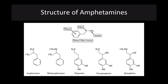If we look at the structures of dopamine, norepinephrine, epinephrine, and the amphetamines, you can see these structures are relatively similar: a phenyl group, an ethyl group, and an amine group. The structure of amphetamine versus methamphetamine is simply the addition of another methyl group. Methamphetamine is much more potent than amphetamine, which is one of the reasons why it has such a high abuse potential.